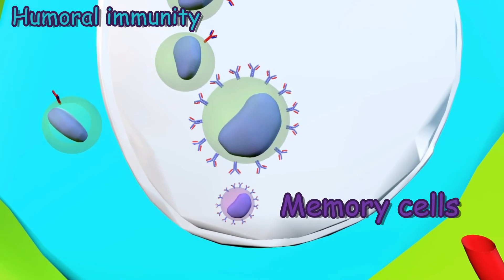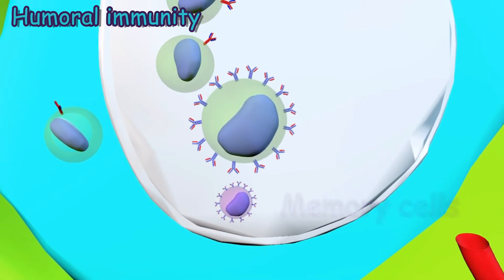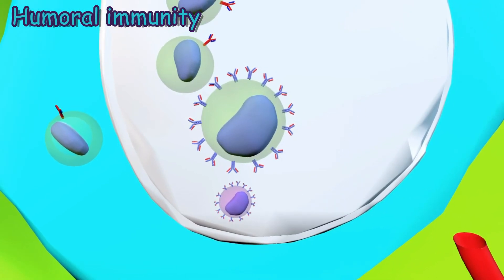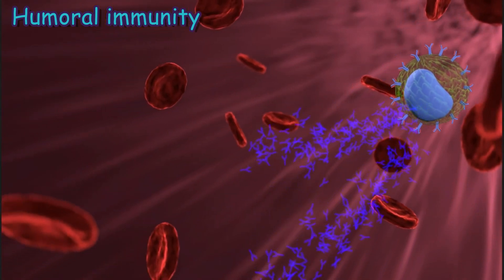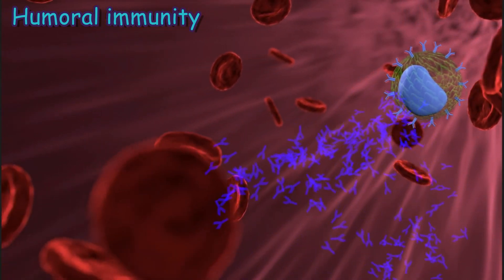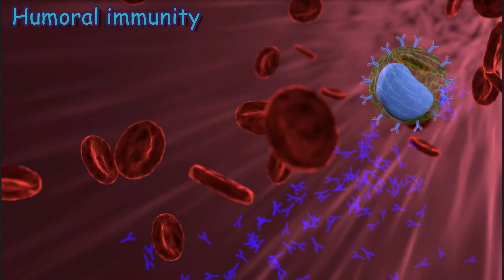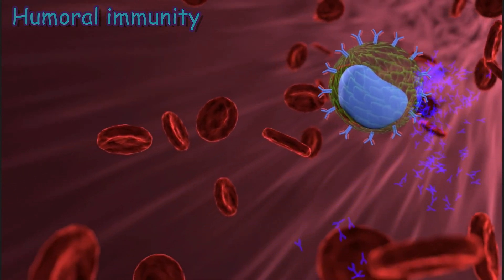Plasma cells release antibodies against the microbes in the blood circulation. The antibodies are directed toward specific microbes and kill them.